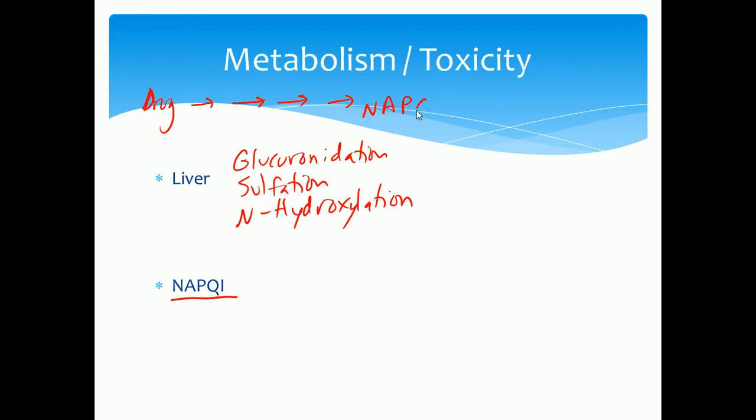One of those is going to be NAPQI, which happens to be toxic and damages the liver, and then it'll get further metabolized and eventually excreted from the body. So NAPQI is one of those intermediates that arises due to the metabolism in the liver and the NAPQI can thus damage the liver.